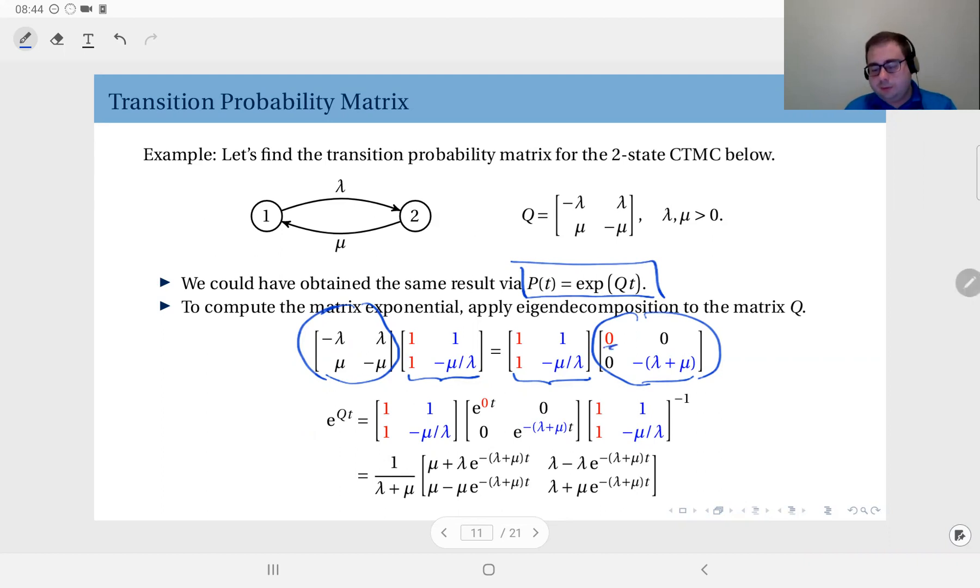Zero here is typical for such matrices, infinitesimal generator matrices. You will always have zero as an eigenvalue. That will be special.